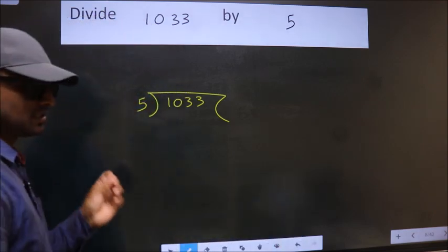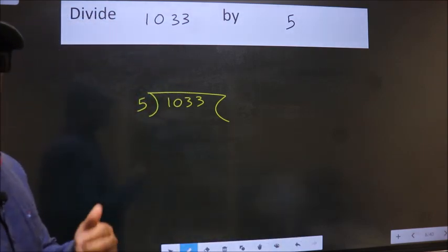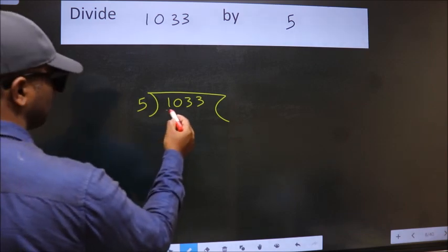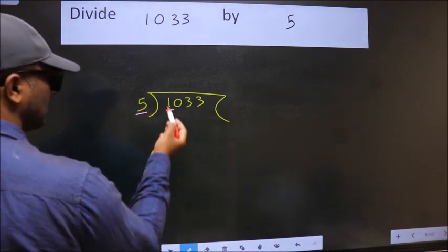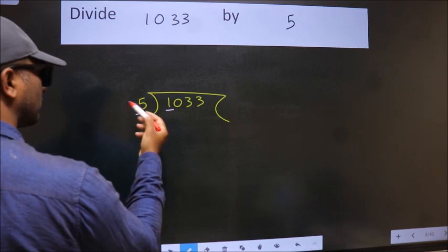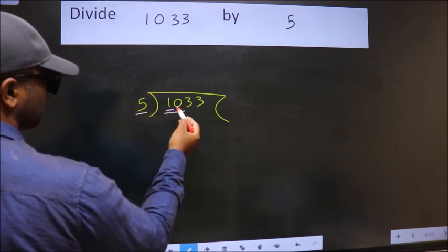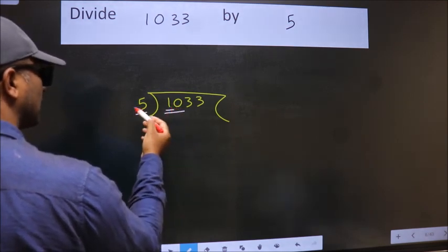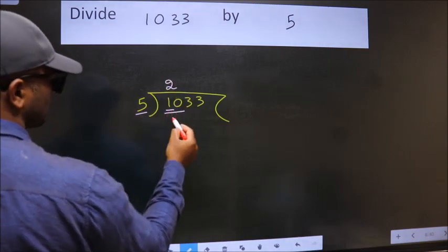This is your step 1. Next, here we have 1, here 5. 1 is smaller than 5, so we should take two numbers, 10. When do we get 10 in the 5 table? 5 times 2 is 10.